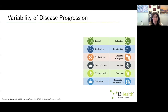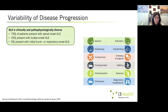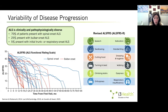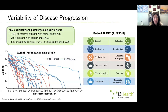Over time the disease progresses to affect other areas, spreading from one region to the next. 70% of patients present with disease in spinal myotomes, meaning either the arms or the legs. 25% present with bulbar onset ALS, where the first symptoms are in muscles supporting speech and swallowing. 5% present with initial trunk or respiratory onset ALS. On the graph, you can see the ALS Functional Rating Scale, which quantifies independence in 12 activities of daily living. People progressively lose points, but the time course is different from patient to patient.